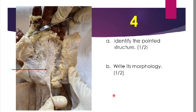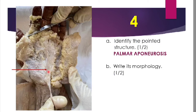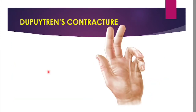The next question asks you to identify the pointed structure and write its morphology. Since no muscles are visible, this structure can be recognized as being in the palm. The whitish structure is the palmar aponeurosis, which is considered to be the degenerated tendon of the palmaris longus muscle. It improves the grip of the hand and protects the nerves and vessels of the palm. An important clinical condition is Dupuytren's contracture, where the medial part of the palmar aponeurosis undergoes progressive shortening, pulling the little and ring fingers into flexion deformity. Treatment is fasciotomy — surgical cutting of the shortened aponeurosis to straighten the bent fingers.